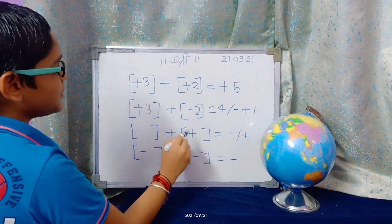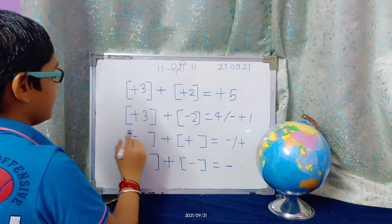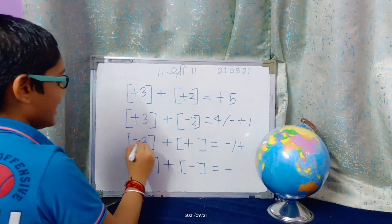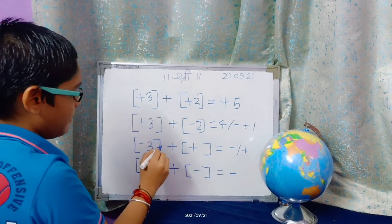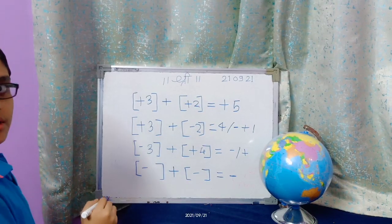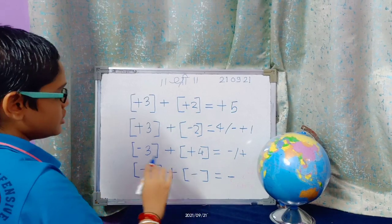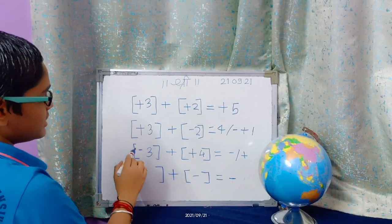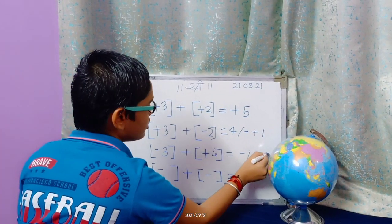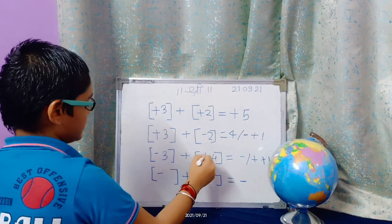Then minus plus plus equals minus or plus, depends upon greater number of the sign. Then minus 3 plus plus 4. So 4 minus 3, 4 minus 3 is 1. So here also answer is plus 1 because of the greater sign.